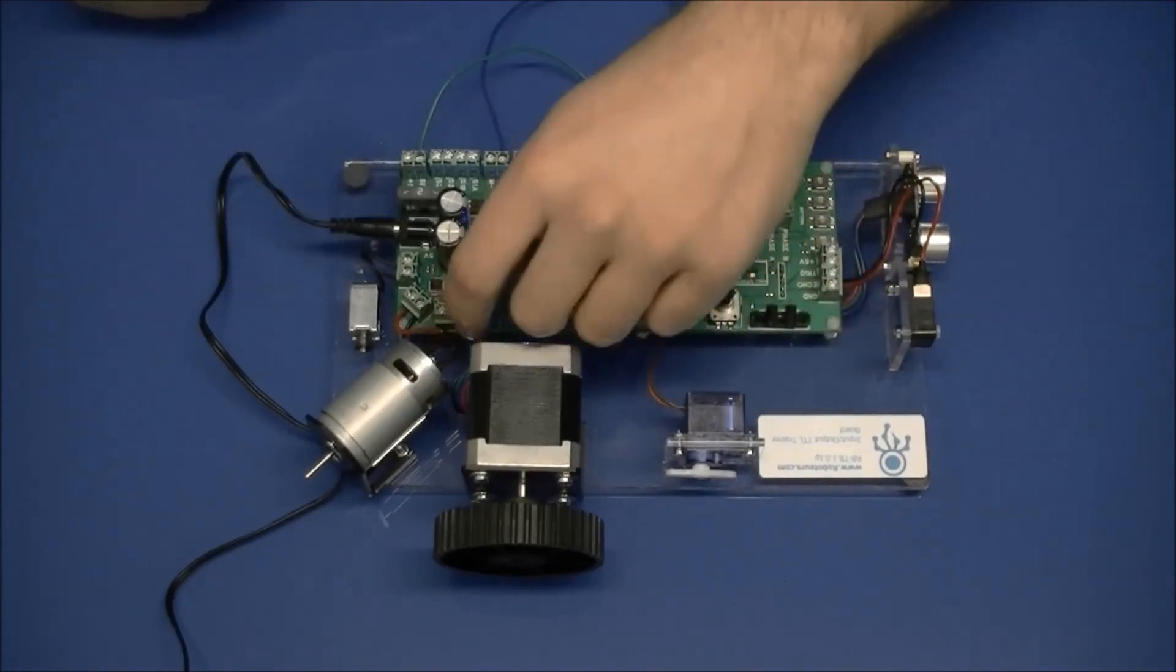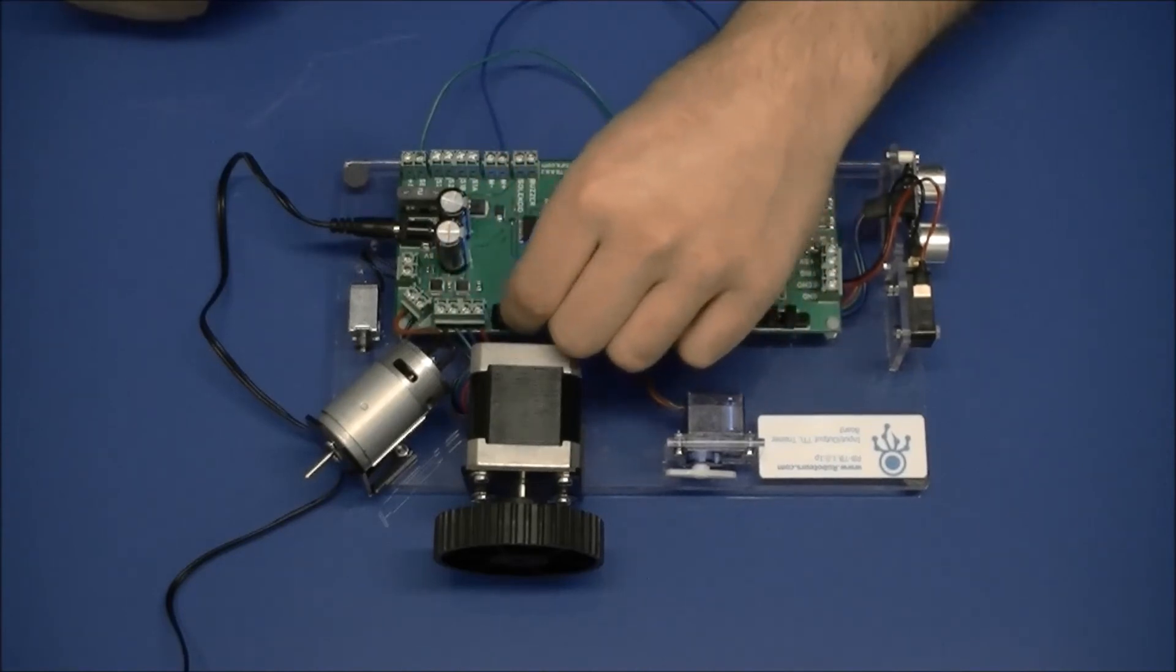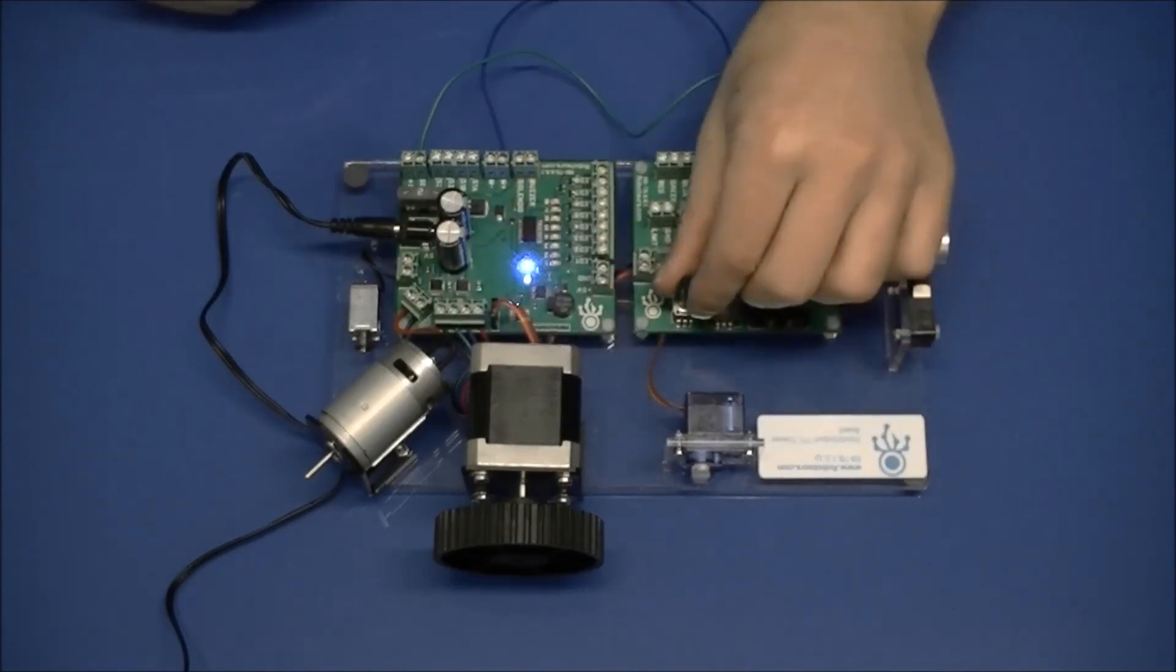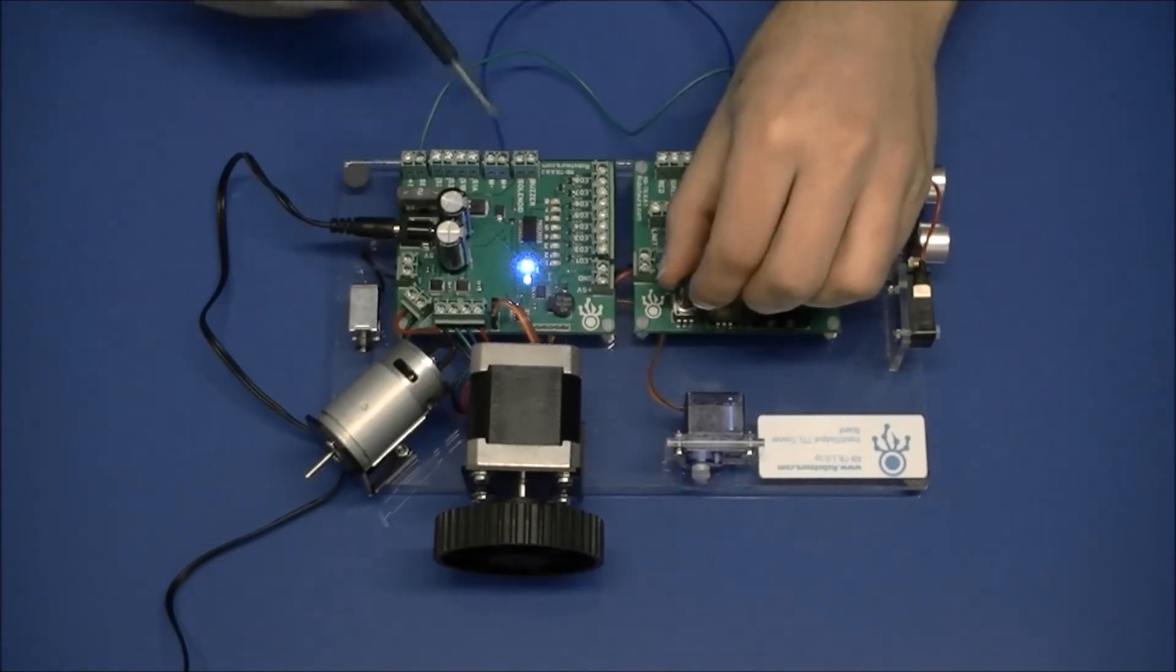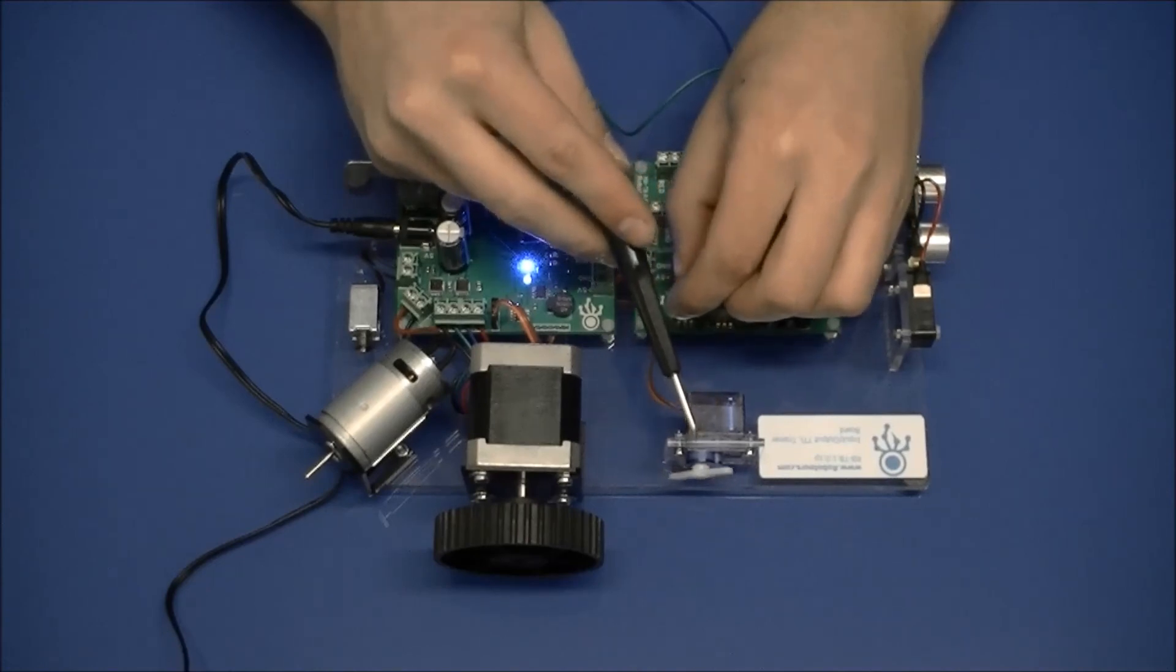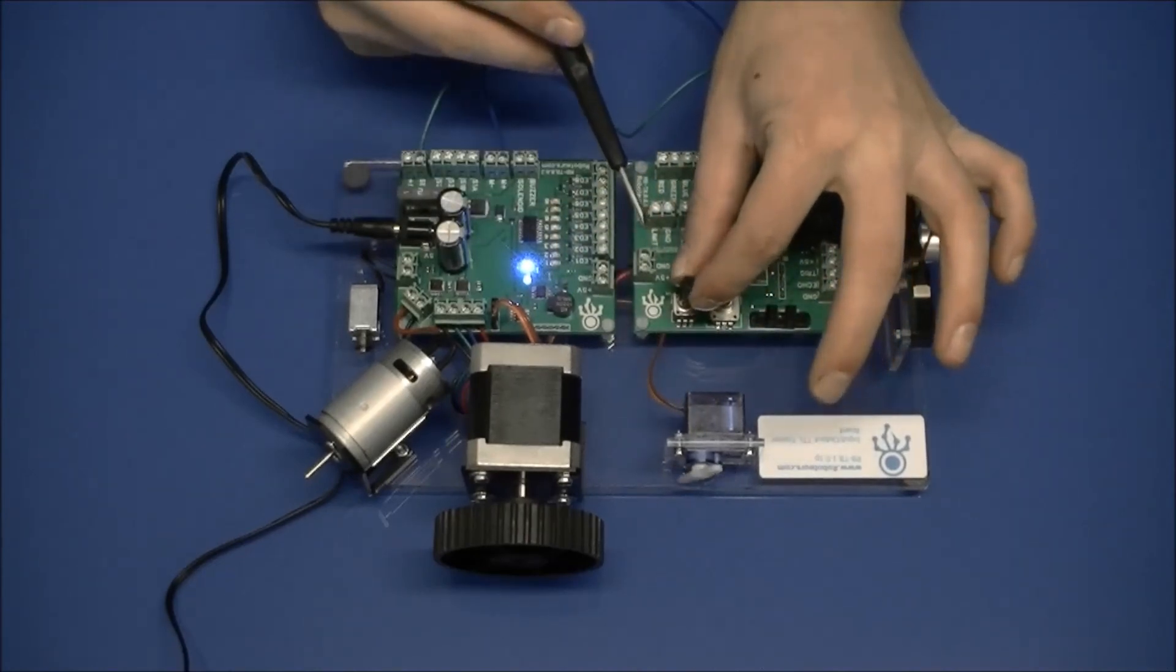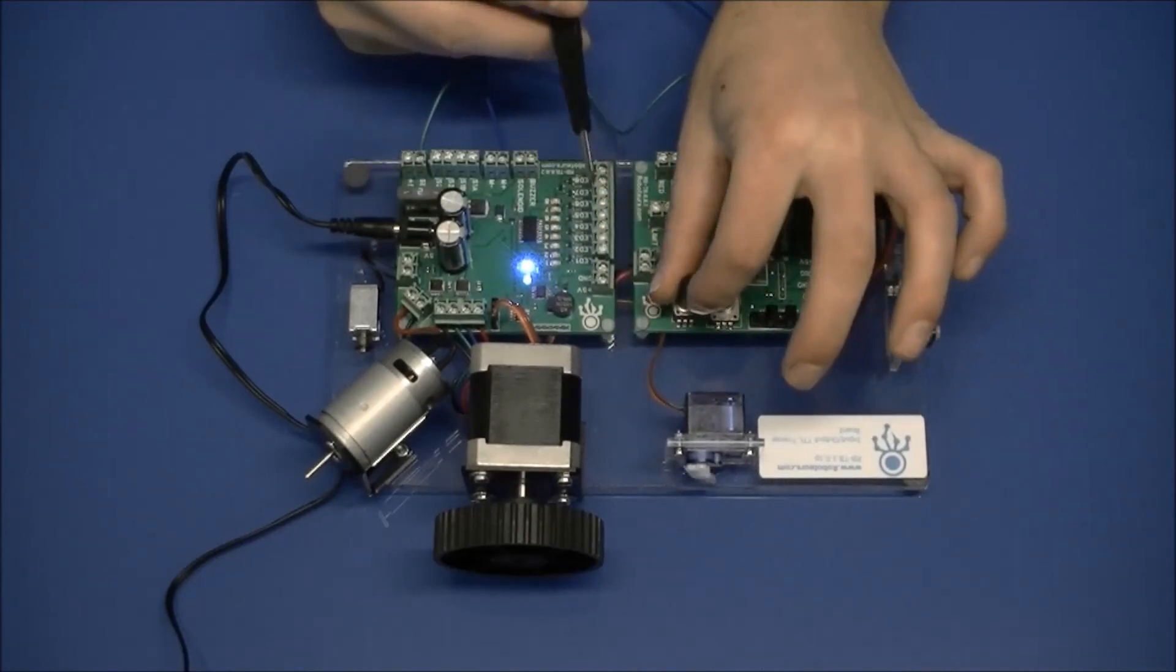We're going to turn the potentiometer to 0. Then we're going to plug this cable in. This is the cable for the servo. Then as we turn the potentiometer we notice that the servo is going to mimic the movement we make.